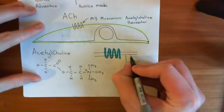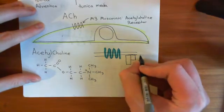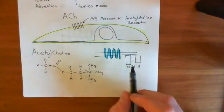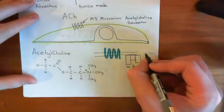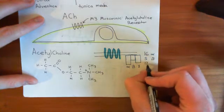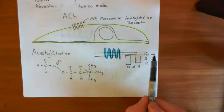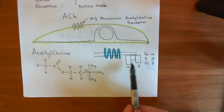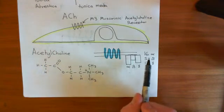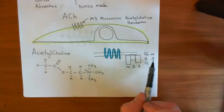Heterotrimeric G-proteins are made up of three subunits: an alpha subunit, a beta subunit, and a gamma subunit. There are 16 different alpha subunits, five different beta subunits, and 12 different gamma subunits, so you can make a lot of heterotrimeric G-proteins. The human genome has 16 different genes which all make slightly different alpha subunits, but all similar enough to function as alpha subunits — 16 choices for alpha, five for beta, and 12 for gamma.